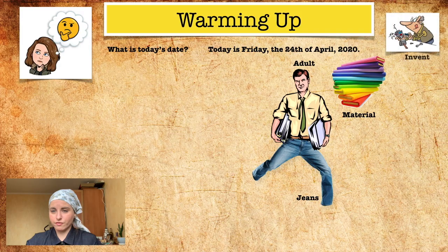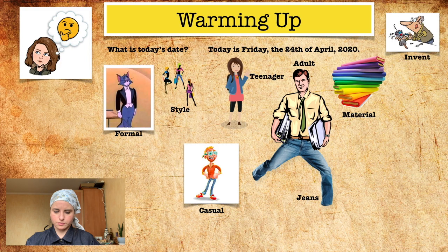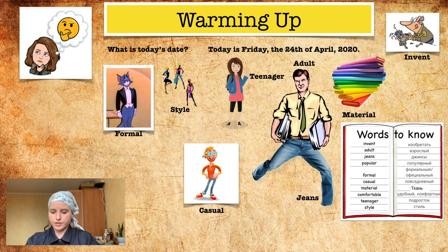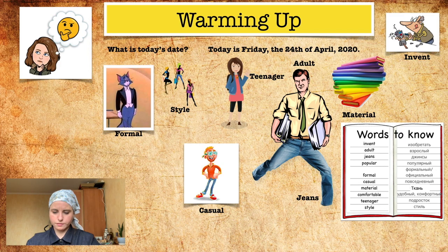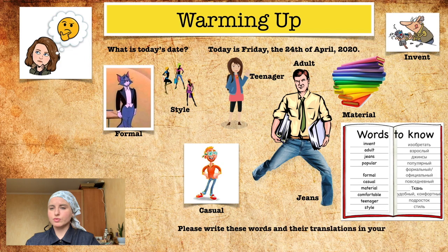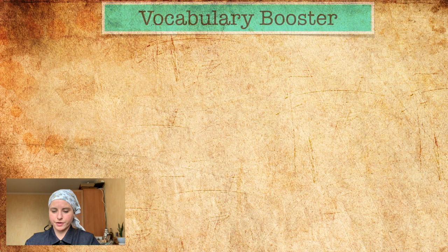We're going to practice pronunciation right now. We have: jeans, adult, material, invent, teenager, casual, style, formal. These are the words that you should know. Please write these words and their translation in your notebook. Stop this video and write them now, then we will continue.